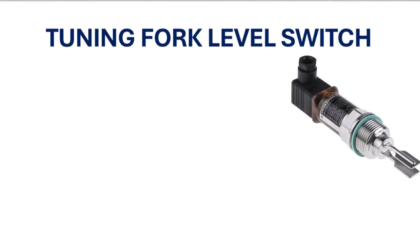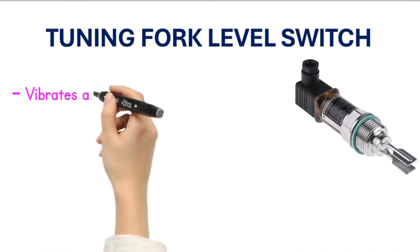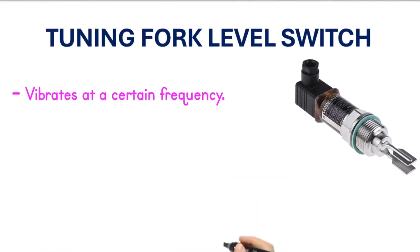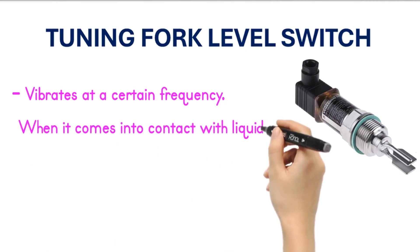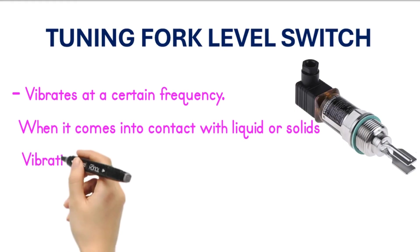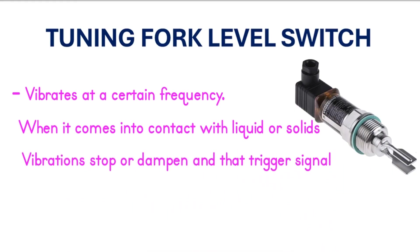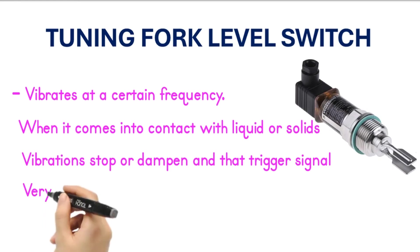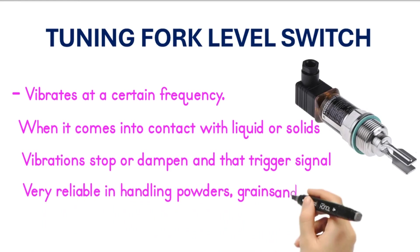Tuning fork type level switch. A tuning fork level switch vibrates at a certain frequency. When it comes into contact with liquid or solid material, the vibrations stop or dampen, and that triggers the signal. It is very reliable in handling powders, grains, and liquids.